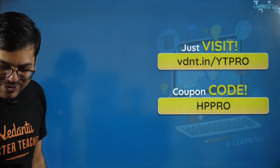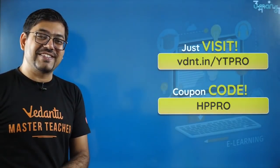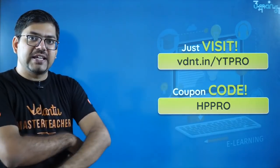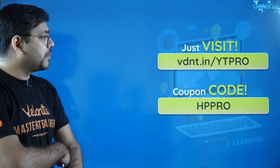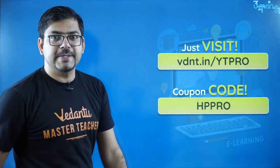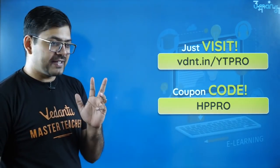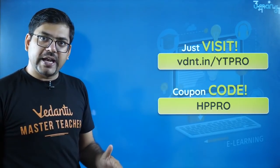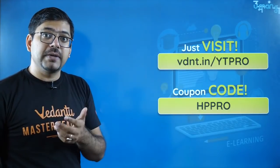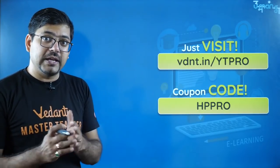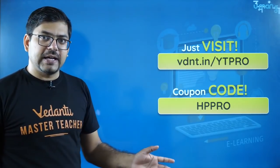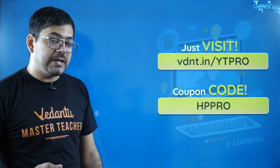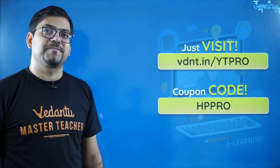I hope you all understood that. If you want to learn more from me and many other master teachers like us, you can log into this session and go to this link which says vdnt.in/ytpro. Just note that this part is in small letters and this is in capitals, so you have to take care of that case because this is case sensitive. After that, once you go there you can choose your grades, you can choose your desired time period - how long you want to take the course, 1 month, 3 months, 6 months. And then whatever price is there, in that price you can apply this coupon code HPpro - HP, P-R-O, HPpro - and you will get a discount of 15%.